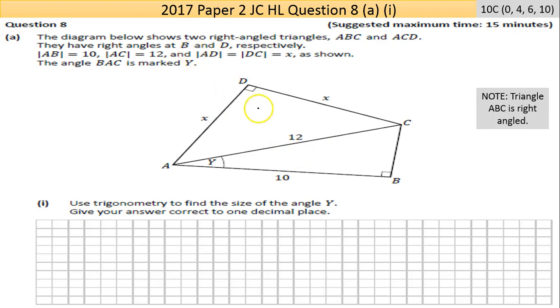They have right angles at B and D so they're marked. The length of AB - these two lines mean the length of AB - is 10 units. They don't give you centimeters or meters or whatever, so just make sure if you're putting it at the end of a question you put in units if appropriate.